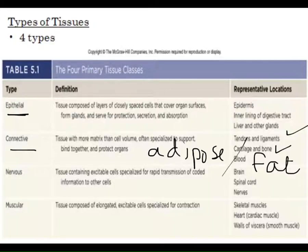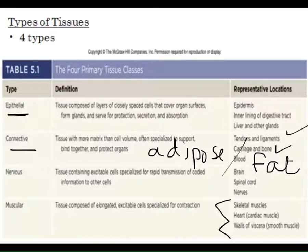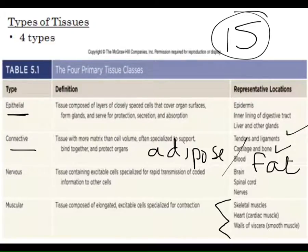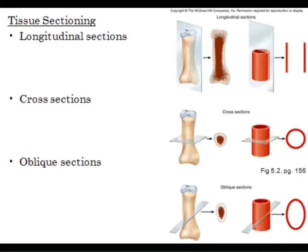By the time we get to the first lab exam we'll have 15 different tissues: 12 today and then the three muscle tissues before the exam. By lab exam time you will know what they look like, be able to identify them, know their special characteristics, and know where in the body each specific kind of tissue is found. You'll also have some histology in lecture, which I'll review briefly.